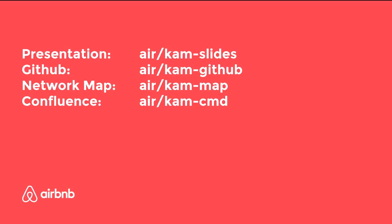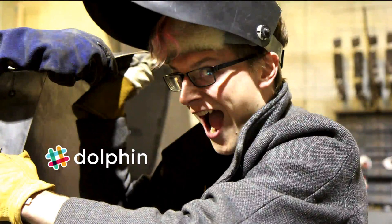A more detailed network map is at air-cam-map, and Confluence has a runbook of how to deal with this. You can find me on Slack as Dolphin. Thanks.